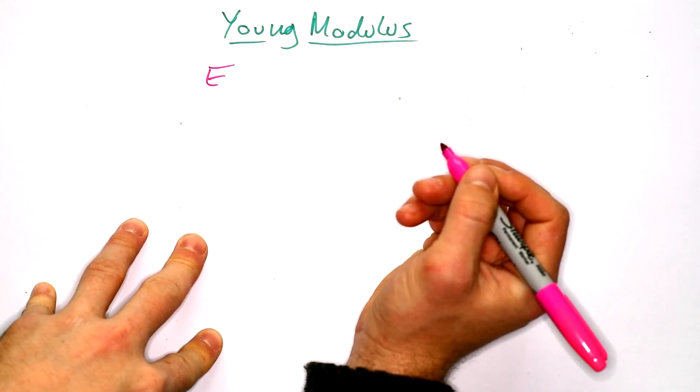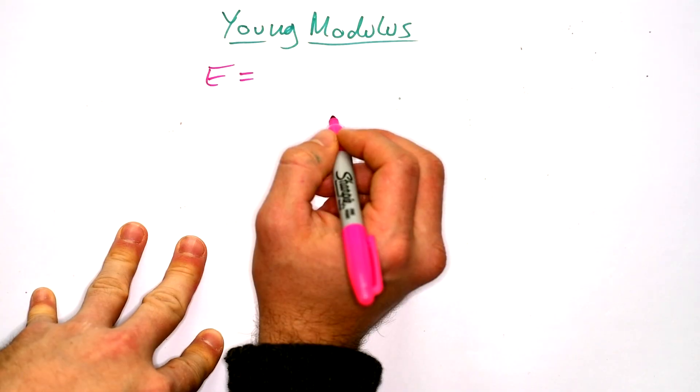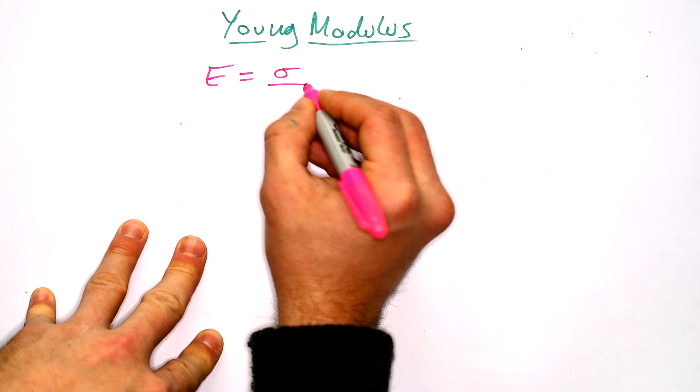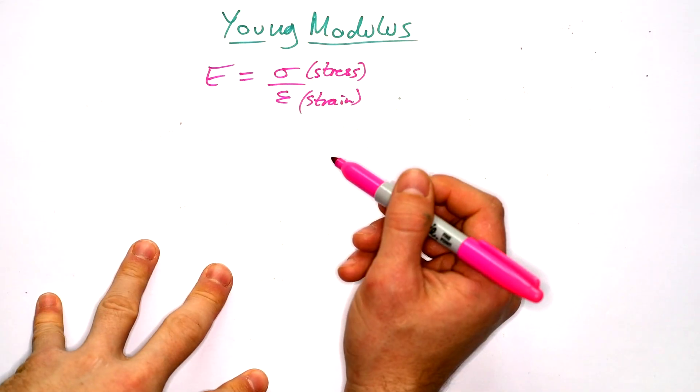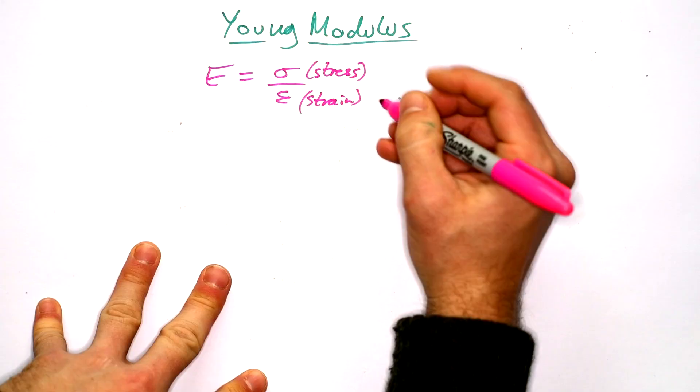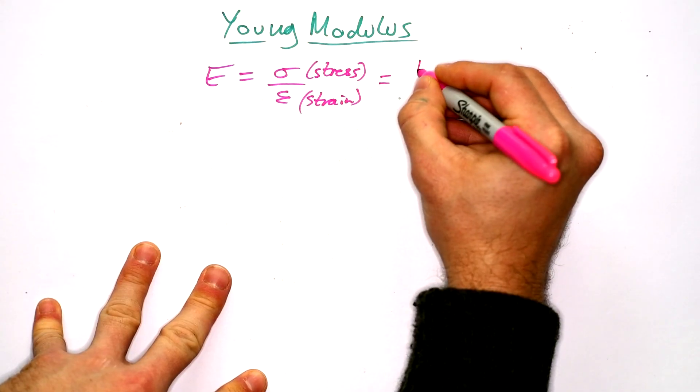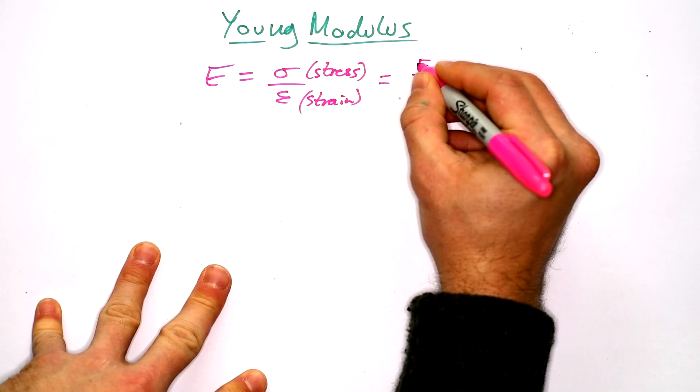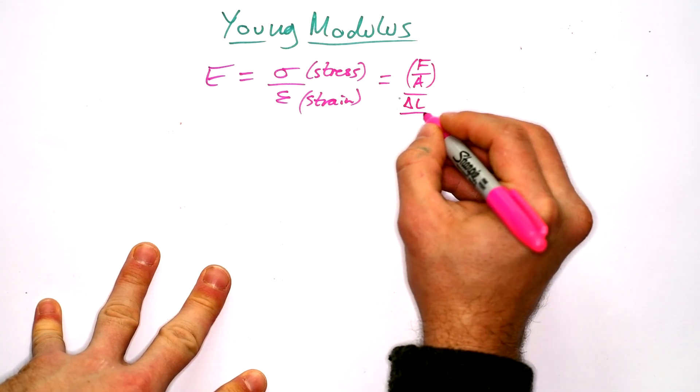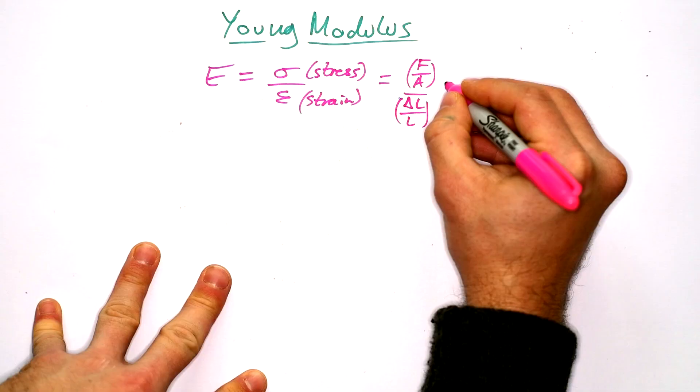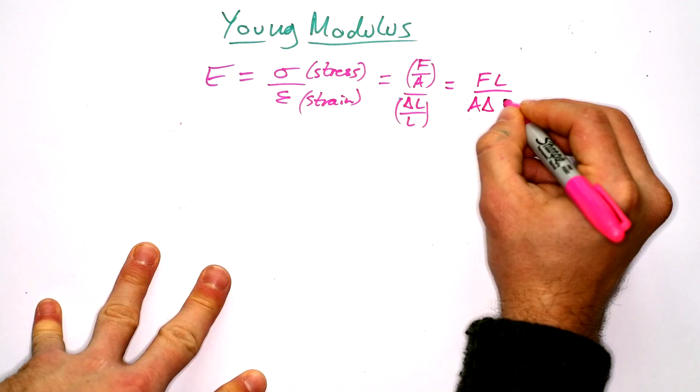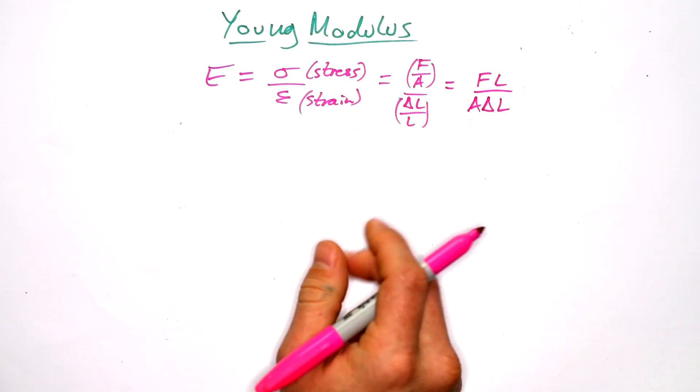So we can say that the Young's Modulus, capital E (why didn't they go for Y instead? That's just confusing anyway), is equal to stress over strain, where stress is F over A. Strain is proportion of extension compared to original length. And so that gives us F over A divided by delta L. You might use X, I use delta L. And so ultimately that gives us FL over A delta L. So that's our equation.